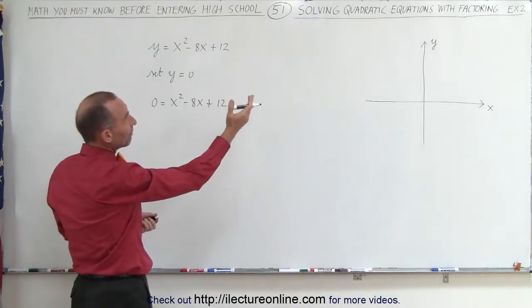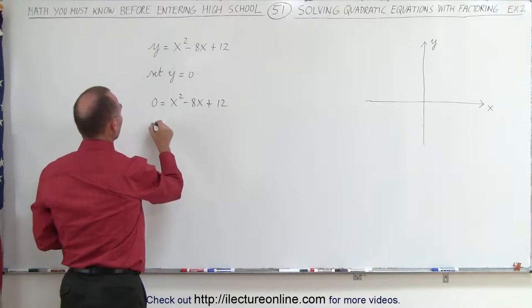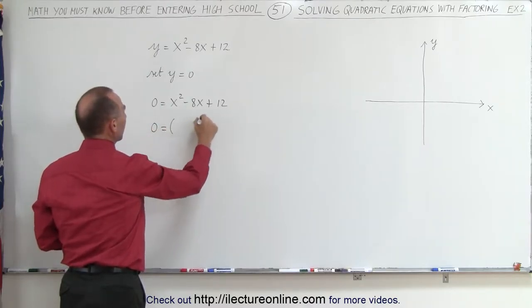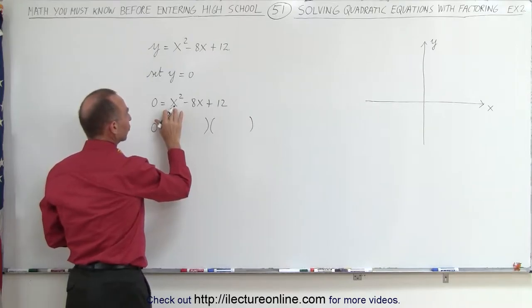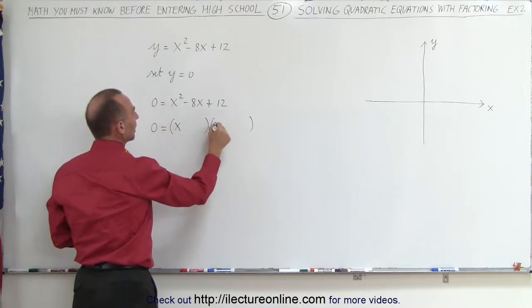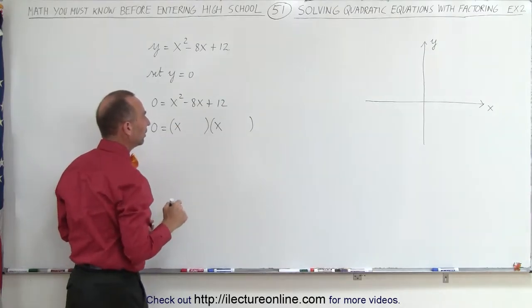We can do that via factoring. We're going to factor the right side. 0 is then going to equal the product of two binomials. First, to get the x², we need an x here and an x there, because x times x gives us x².